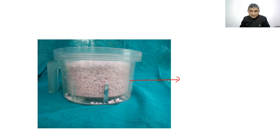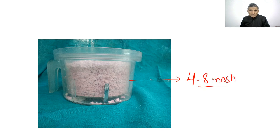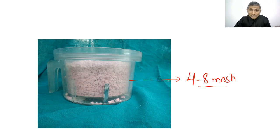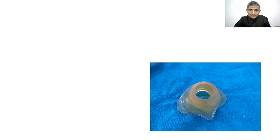This is CO2 absorbent — soda lime with indicator in a transparent canister. Its optimum granule size is 4–8 mesh. When 50–70% of the soda lime color has changed, it should be replaced. It comes in granule form, not powder, and is used for carbon dioxide absorption as part of a closed circuit.